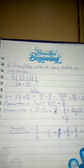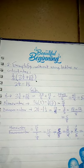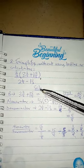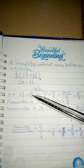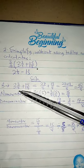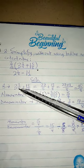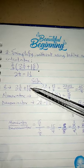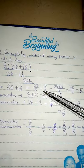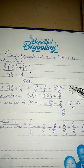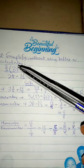Number two: simplify without using tables. Following the order of operations, work on the bracket for the numerator. Bring out the fractions in the bracket and turn each to an improper fraction. This becomes 27 over 8 (eight times three plus three), and the other becomes 13 over 8 (eight times one plus five). The LCM of 8 and 8 is 8. So 27 plus 13 is 40 over 8, which equals 5.